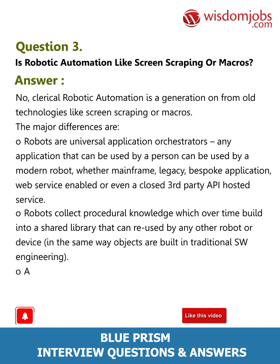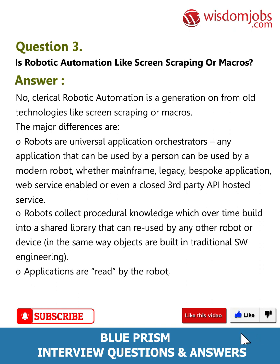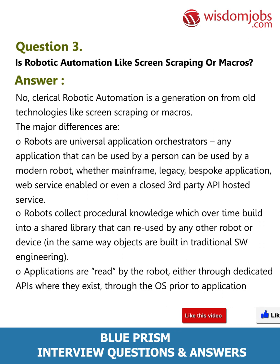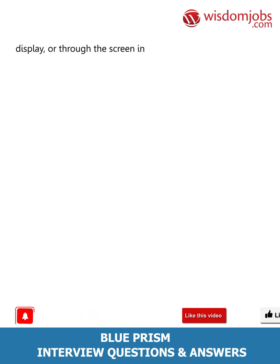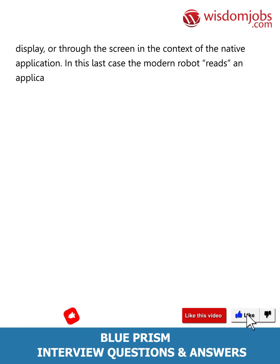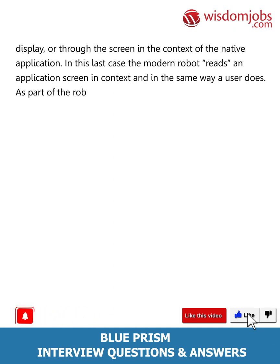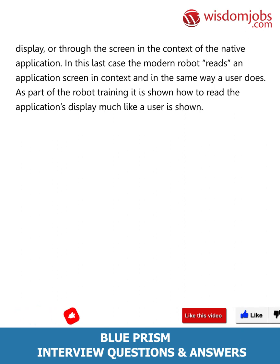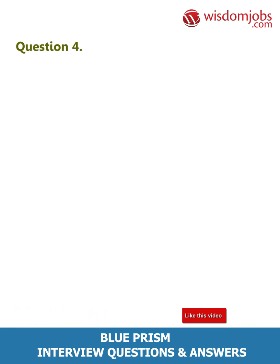Applications are read by the robot either through dedicated APIs where they exist, through the OS prior to application display, or through the screen in the context of the native application. In this last case, the modern robot reads an application screen in context and in the same way a user does. As part of the robot training, it is shown how to read the application's display, much like a user is shown.